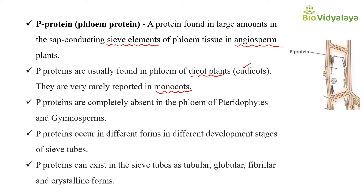P proteins are completely absent in the phloem of pteridophytes and gymnosperms. Pteridophytes means fern-like plants and gymnosperms means non-flowering seed-producing plants.